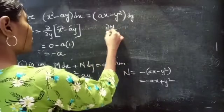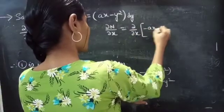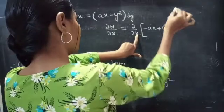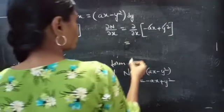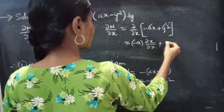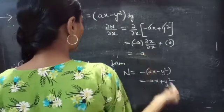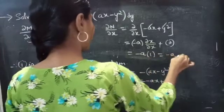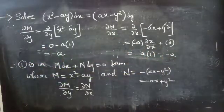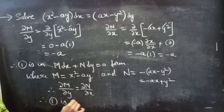Now, ∂N/∂x equals ∂/∂x of minus ax plus y squared. We treat y squared and a as constants. The derivative of minus ax is minus a into ∂x/∂x, plus the derivative of the constant y squared is 0, which equals minus a. So we have ∂M/∂y equals ∂N/∂x equals minus a. Therefore equation 1 is an exact equation.